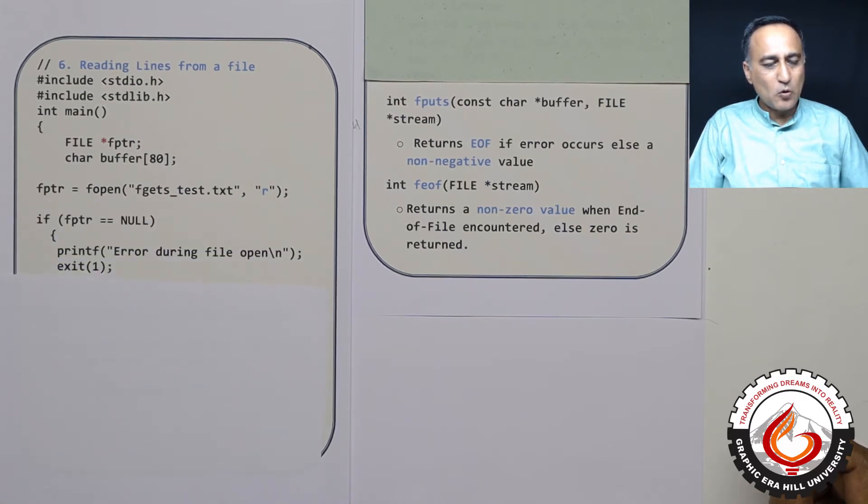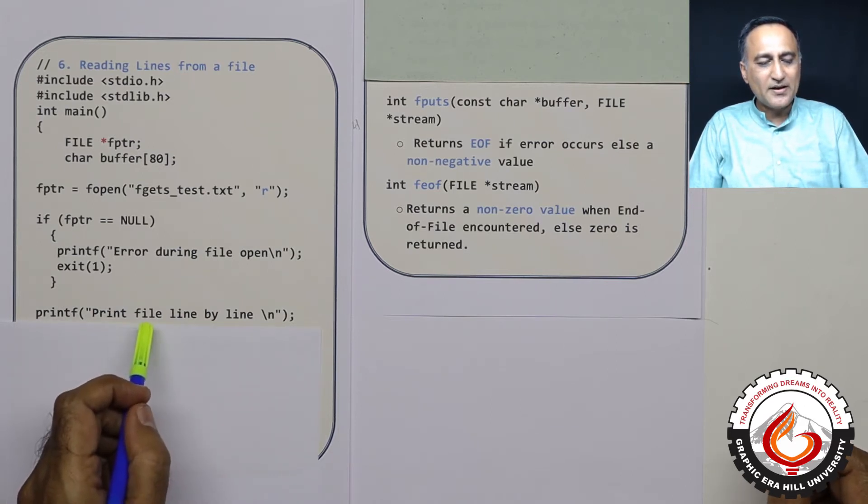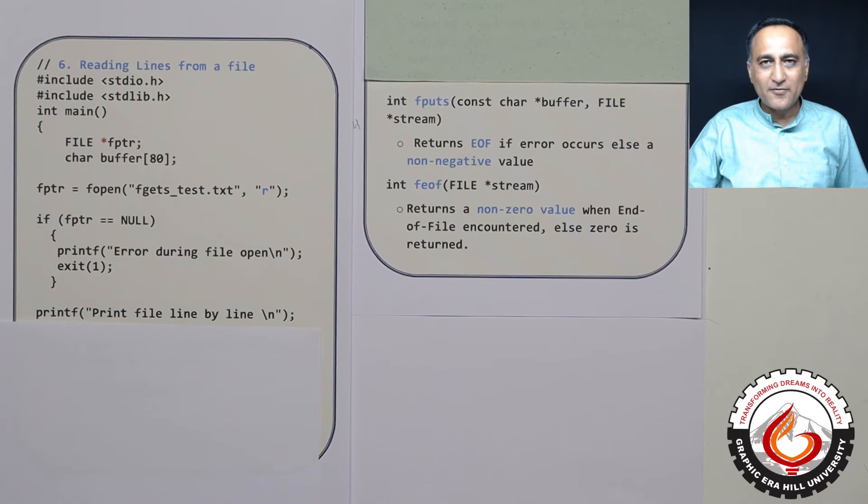Now if there is no problem opening the file for reading, I will not get this null and I will proceed ahead. In the next step what I am going to do is I am trying to print on the screen that I am going to read a file line by line and then I am going to display it on the output, standard output which happens to be your monitor or your screen.